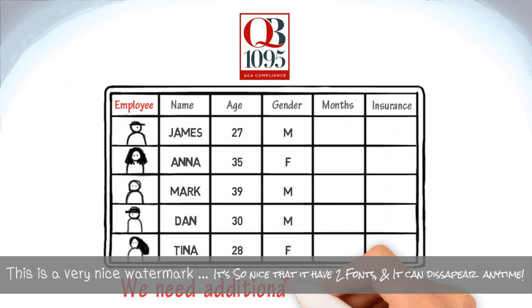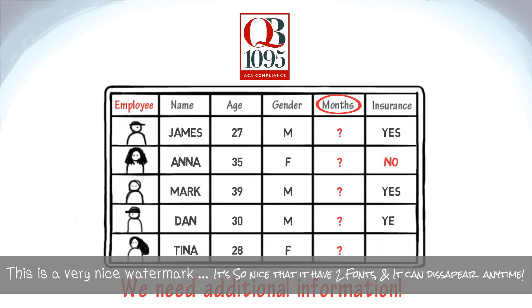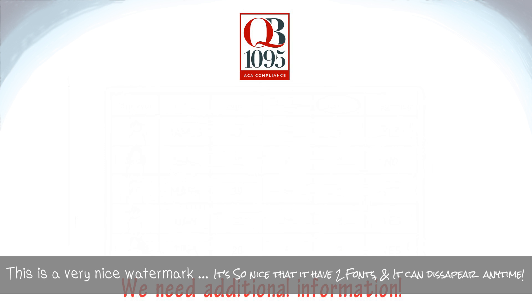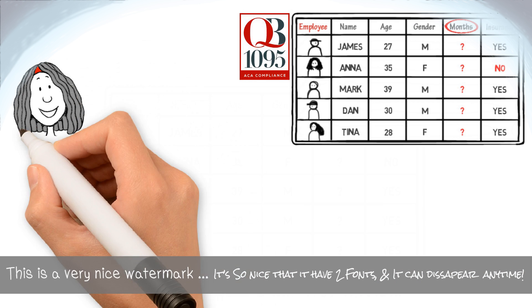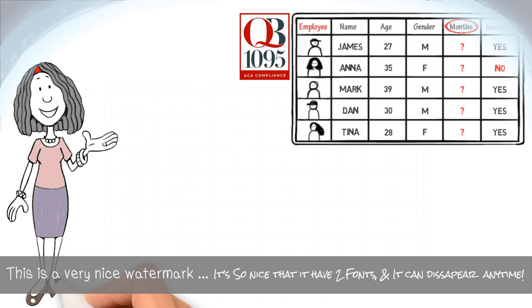But we may still need additional information, such as what months the employee was covered for insurance, or if they chose to take insurance from their spouse. Finally, once all information is filled in,